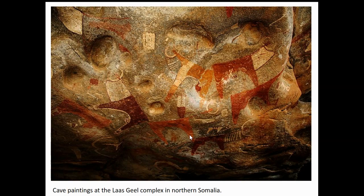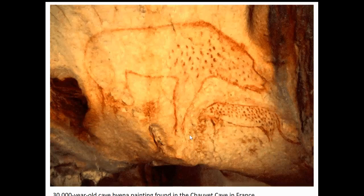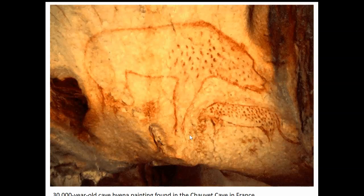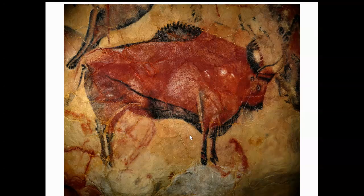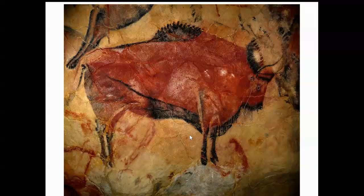We can only do our best to figure out what these symbols truly represent — we'll never know for certain because they didn't write explanations. There's a 30,000-year-old cave painting of a hyena found in the Chauvet Cave in France — maybe they were warning others, or maybe the hyena was a god to them. The cave of Altamira near Santander, Spain shows what looks like an ox. For the paint, they likely used blood for red pigment and some other material for black.